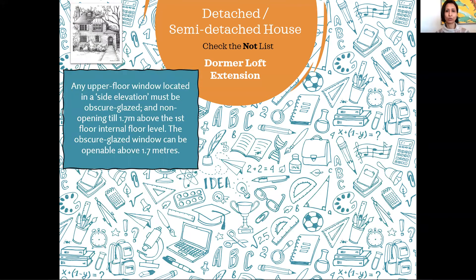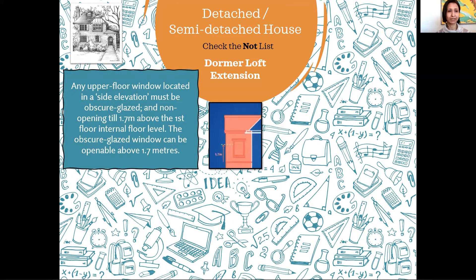Any upper floor window located in a side elevation must be obscure glazed — meaning you can't use clear glass; it should be frosted. Looking at this pink sketch, the side elevation of your dormer: any window you insert should have no clear glass, and it should be fixed so that the top of the window is above 1.7 meters from your first floor level. The window can be openable like a small ventilator, but the whole glass must be obscure. This is to avoid privacy invasion and maintain good relations with your next-door neighbors.